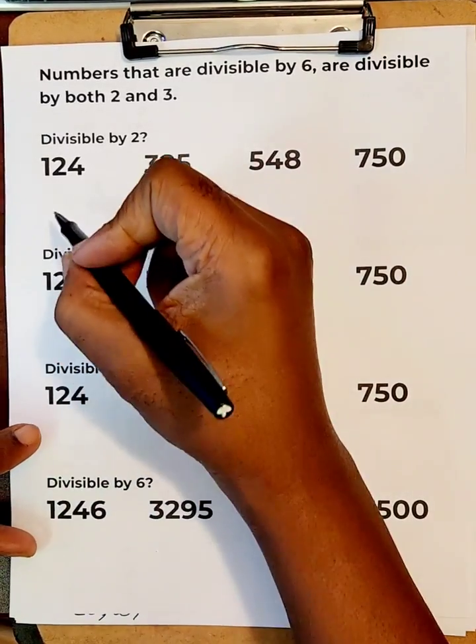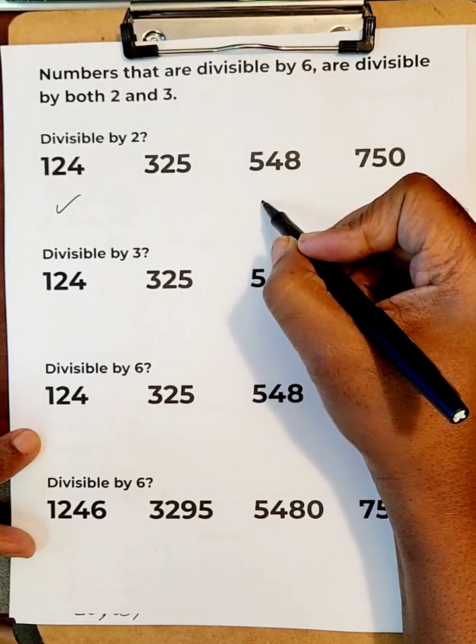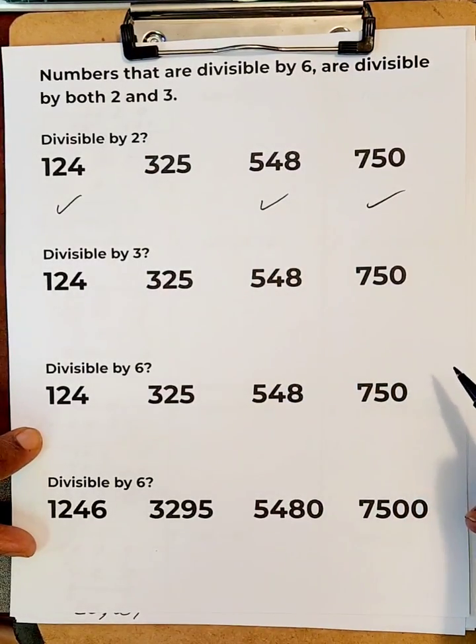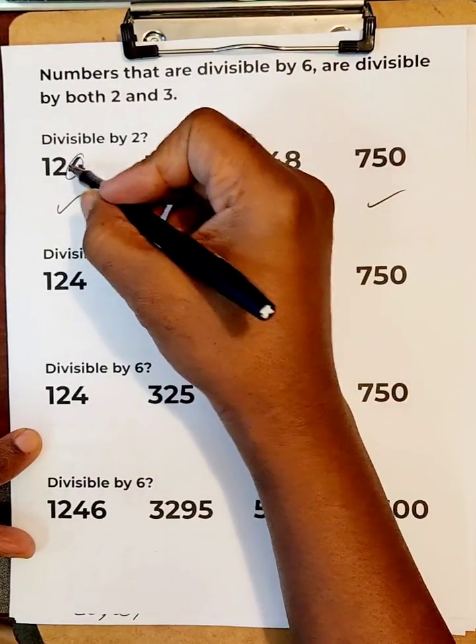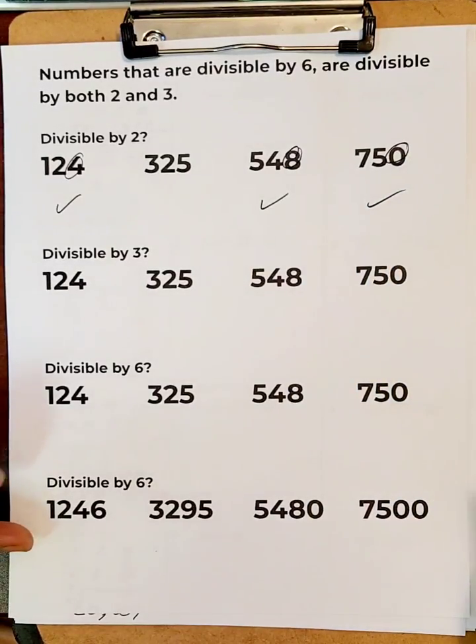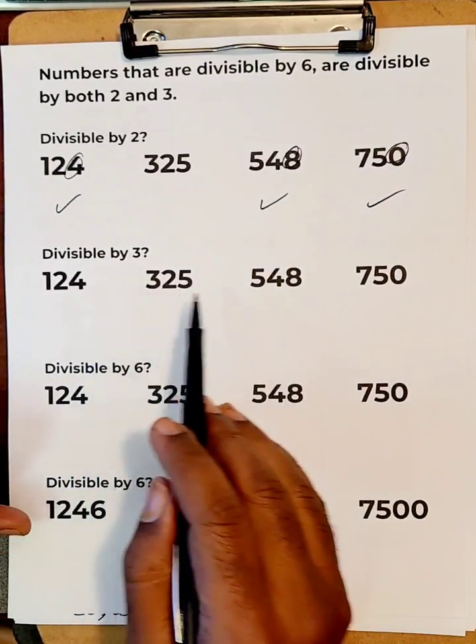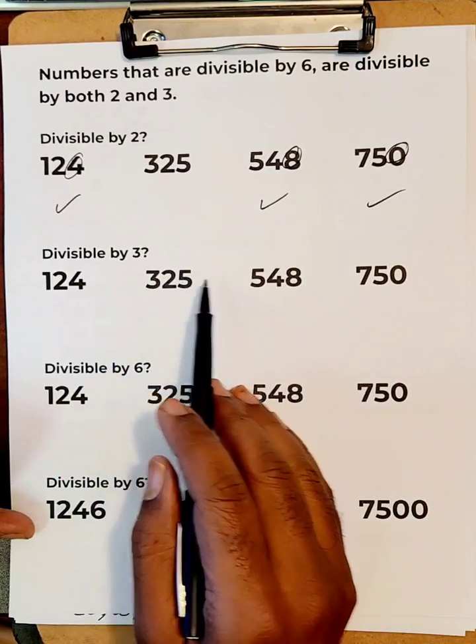If you said the first, the third, and the fourth, then you're right, because the ending numbers are all in the two timetables. Next, which of these four are divisible by three?